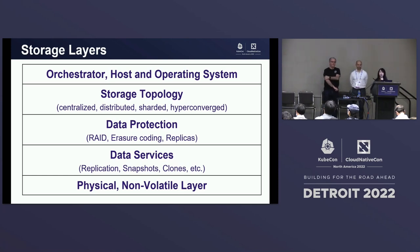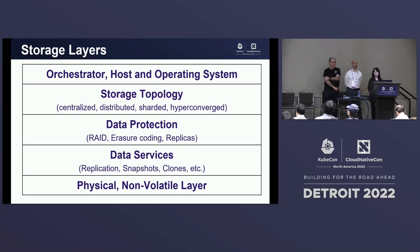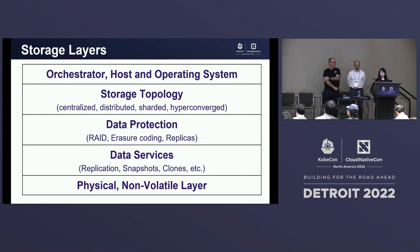Storage systems typically have a data protection layer that adds redundancy — here we refer to RAID, erasure coding, or replicas. They also typically have data services in addition to core services, such as replication, snapshots, and clones. Ultimately the system will persist data at a physical storage layer, which is normally non-volatile and affects overall performance and long-term durability.